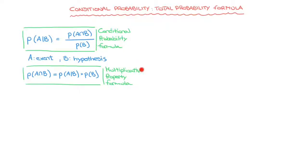We also saw the multiplicative property formula, which was obtained by rearranging the conditional probability formula and gives us the probability of event A and B occurring. As a quick reminder, we're dealing with conditional probabilities — in other words, probabilities in which the occurrence of one event, typically called B, has an impact on the probability of an event A occurring.